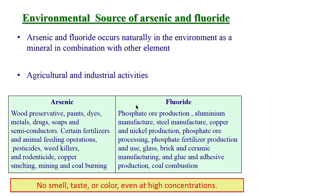Arsenic is present in wood preservatives, paints, dyes, metals, semiconductors, certain fertilizers, animal feeding operations, pesticides, weed killers, rodenticides, copper smelting, mining, and coal burning. For fluoride, phosphate production, aluminum manufacturing, and steel manufacturing all involve fluoride. The solid and liquid waste from these anthropogenic operations will contain arsenic or fluoride.